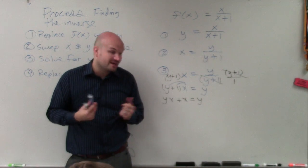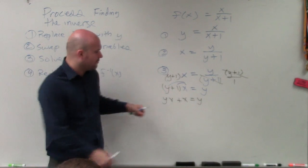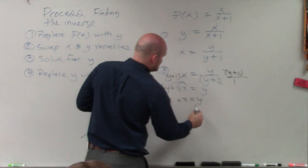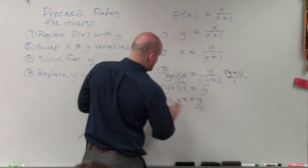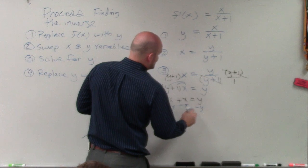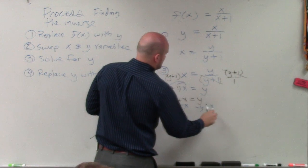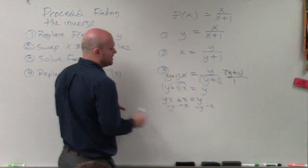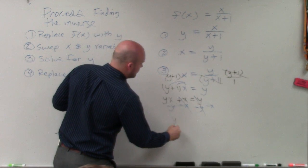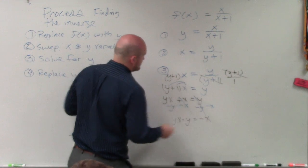So to solve for a variable, you've got to get the variable on the same side. So I'm going to decide to get the y's on the left side. To do that, I will subtract a y on both sides, and I will subtract an x on both sides. By doing that, those go to 0, and I'm left with yx minus y equals negative x.